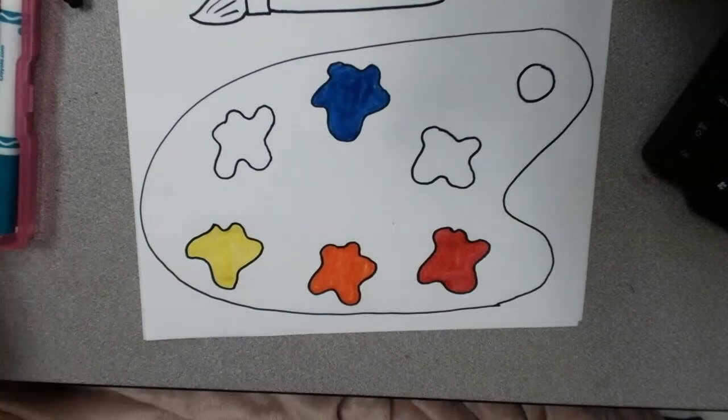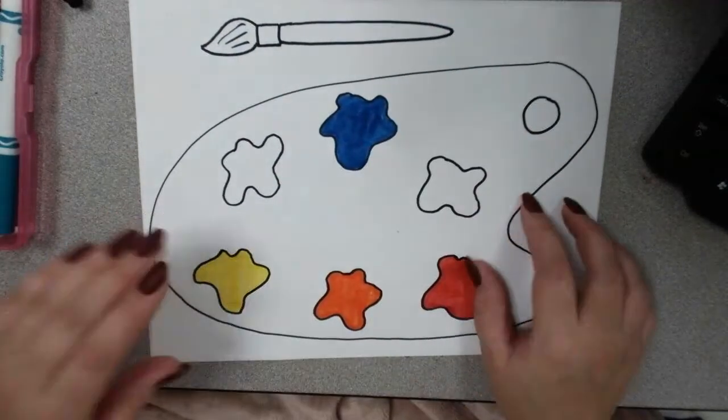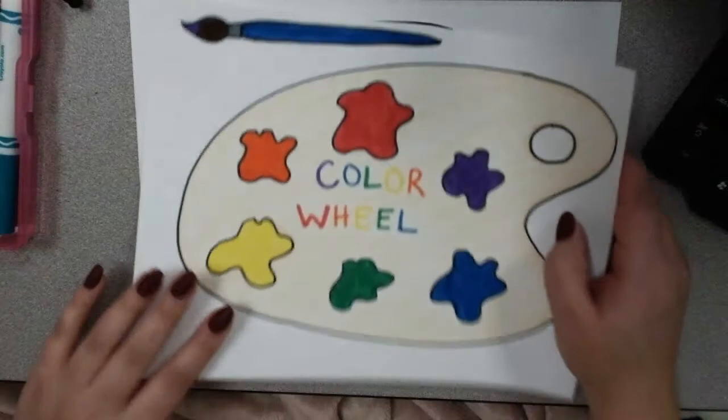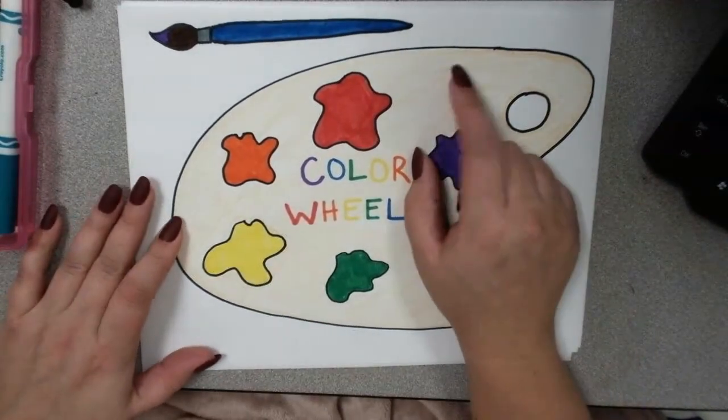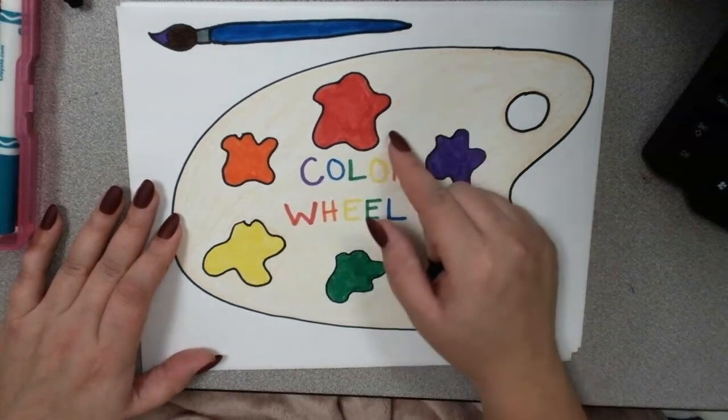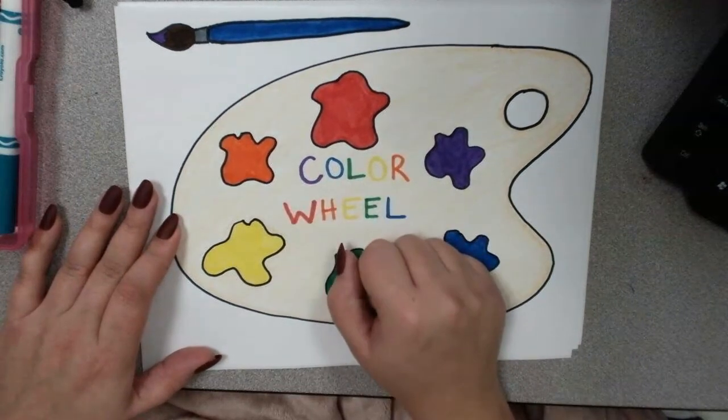All right. So, I'm going to stop here for my example, but let's look at my finished one. All of mine are colored in. I use kind of a peach colored crayon to color the wood for my paint palette, and I wrote color wheel in the middle.